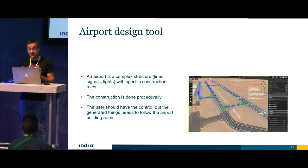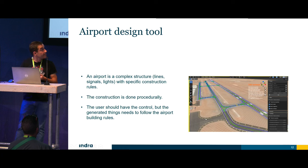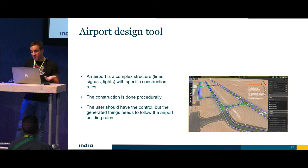There is a document I call Anexo 14 — it's like 300 pages that explain how to build an airport. For example, the perpendicular lines you are seeing here — the distance between these lines is ruled by the curvature of the road. The distances between lights, the position of the lights, the direction they need to be pointing — everything is set, ruled, constrained.